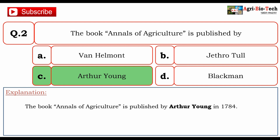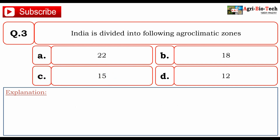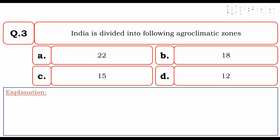Third question: India is divided into how many agro-climatic zones? The options are A. 22, B. 18, C. 15, and D. 12.